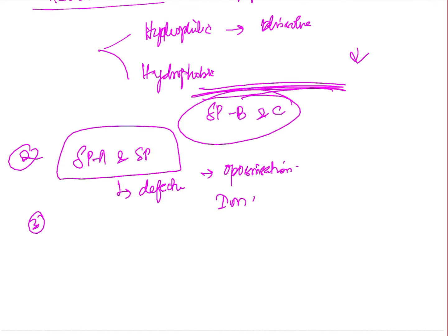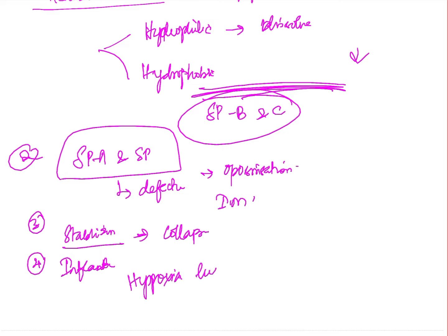Surfactant is responsible for stabilization of the alveoli, helping them withstand collapse. It also helps in the inflation of the lungs in the newborn. Before birth, in the fetal stage, there is no respiration — exchange of gases takes place through the placenta between fetal blood and the mother's blood. When the newborn is born, respiration starts as the respiratory centers are activated by hypoxia and hypercapnia. The lung expands and collapse is prevented by the presence of surfactant.